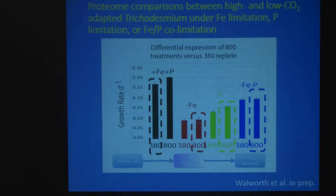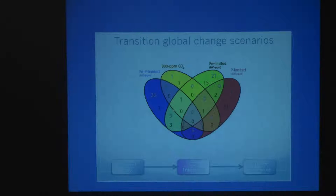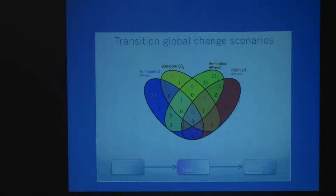For the last comparison, let's compare the high CO2 cultures to the low CO2 cultures. We call this the transition from low to high CO2. So what kind of differential expression do we see comparing this way? Well, this is a complicated Venn diagram because there are more treatments, but I'll walk you through it. The iron limited ones are now expressing 21 upregulated and 15 downregulated.